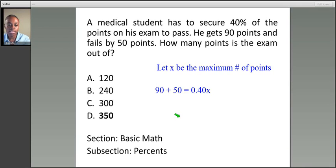He gets 90 points but fails by 50 points. That means he needed 50 more points. That's why we're adding it up—we're trying to find the total number of points on the exam. So you don't say 90 minus 50 in this example.